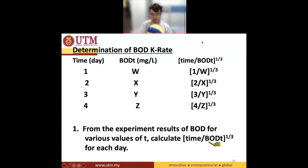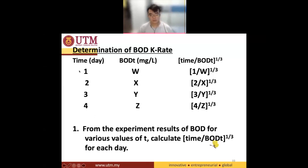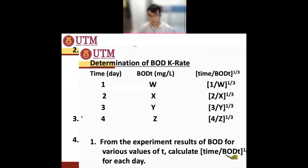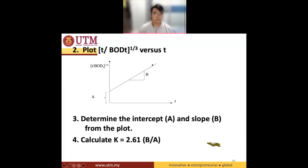After you have obtained all these values and the days, you need to plot a graph. The Y-axis of the graph is time divided by BOD to the power of one third, and the X-axis is time: 1, 2, 3, 4. You will see a straight line graph. After you plot that straight line, you measure the gradient and also the intercept. You obtain value A and value B. So our K is actually 2.61 times B divided by A. This is the value of K.